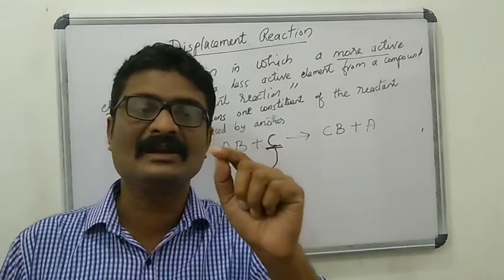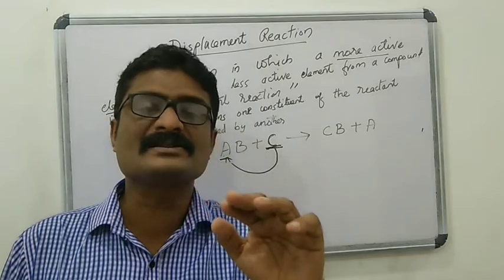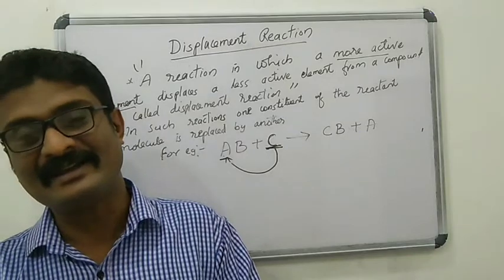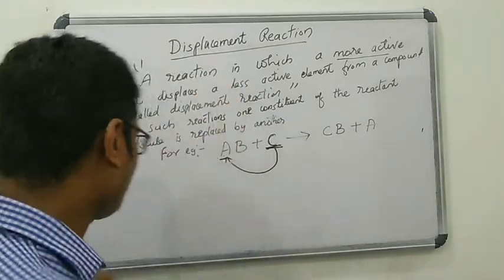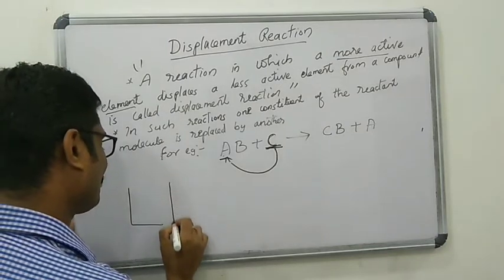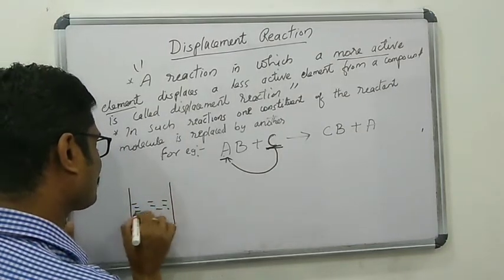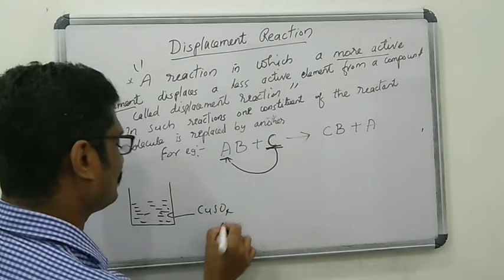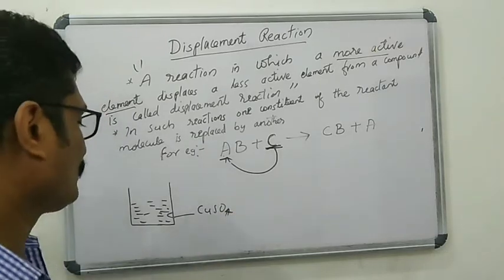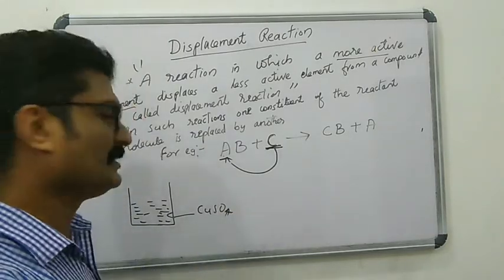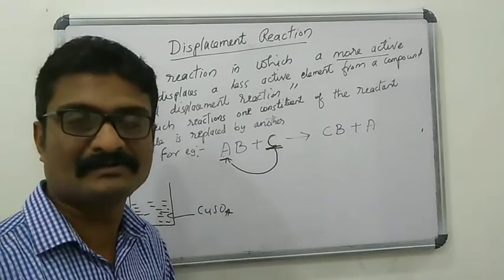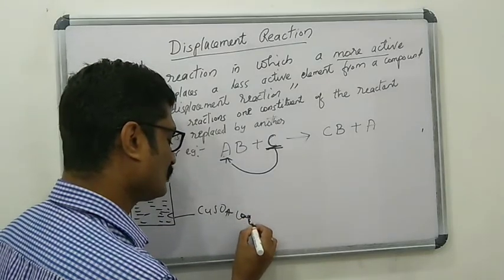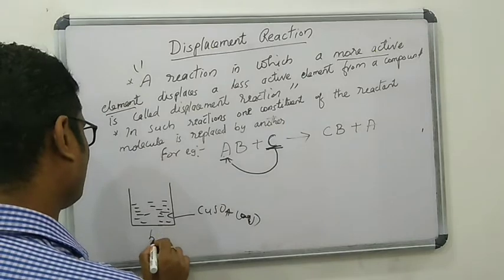A more reactive metal displaces a less reactive metal from its salt solution. For example, we can take a copper sulfate solution in a beaker — the solution of copper sulfate in water. This is called an aqueous solution because the solvent is water. The color of the solution is blue.